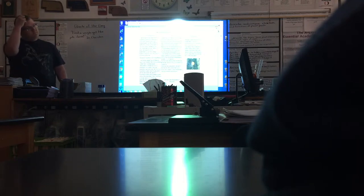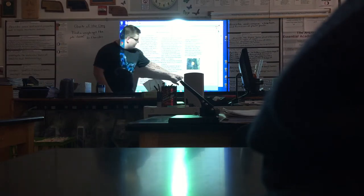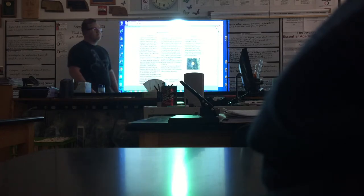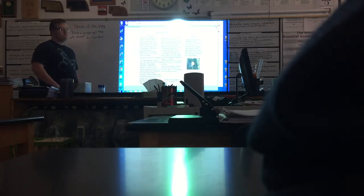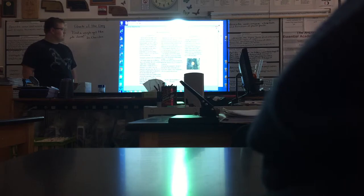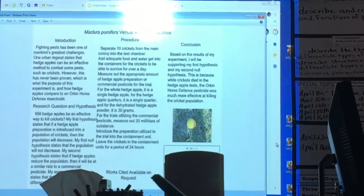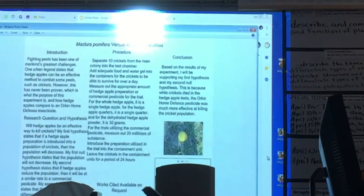What do your different colors represent? The blue is the first trial, the red is the second trial, the yellow is the third trial. The first one is the whole hedge apple, the second one is the quarter, and the third one is the crushed. And then I assume that the right spot is the insecticide? Yes. And then the last one is your control? Yep.